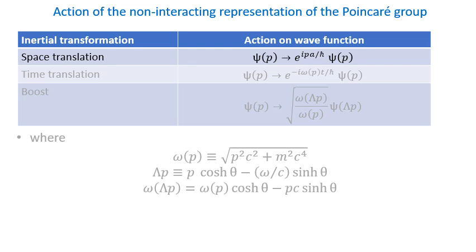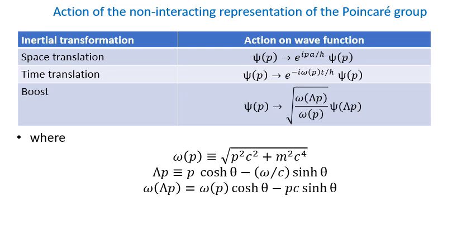Let us now take a closer look at how particle wave functions change under inertial transformations of the observer. These transformations can be written most conveniently in the momentum representation. For example, a space translation by the distance A multiplies the wave function by the exponential plane wave factor. Time translation multiplies the wave function by a factor where time t is multiplied by the energy function that we will denote by omega of p. Finally, a boost transformation shifts wave function argument and multiplies the function by a normalization factor.